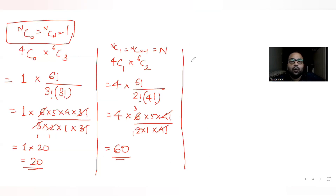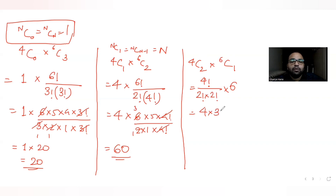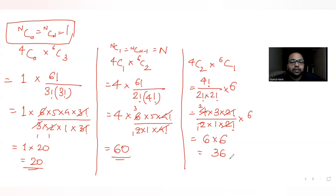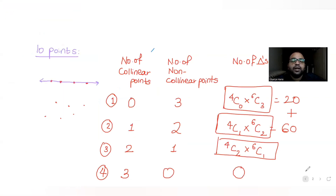Case 3: 4C2 × 6C1. We have 4C2 = 4! / (2! × 2!) = (4 × 3 × 2!) / (2! × 2 × 1) = 6. And 6C1 = 6. So 4C2 × 6C1 = 6 × 6 = 36. Case 3 gives 36 triangles.